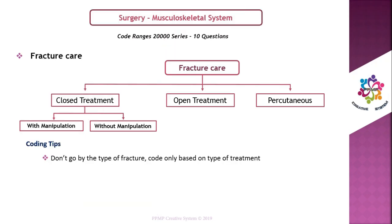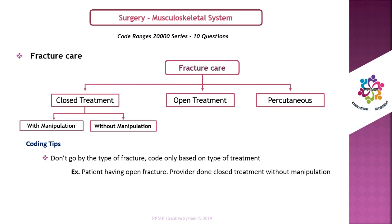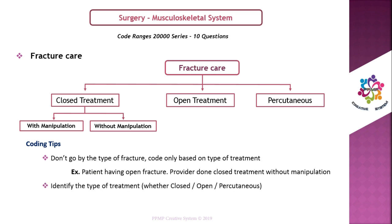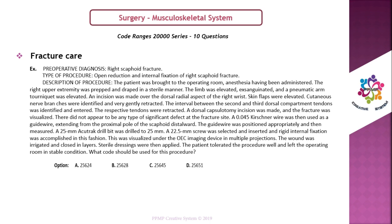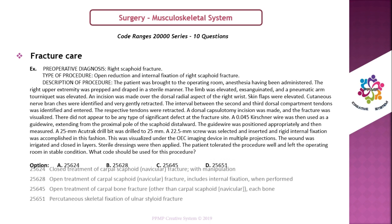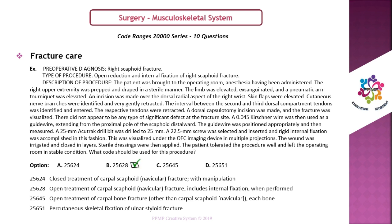Coding tips for fracture care: Number one — do not go by the type of fracture; code only based on the type of treatment. Example: if a patient has an open fracture but the provider performs closed treatment without manipulation, you code only based on treatment — so the answer will be closed treatment. Number two — identify the type of treatment: closed, open, or percutaneous. Number three — identify the fracture site, then look up the appropriate code.